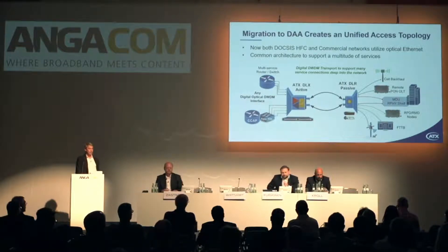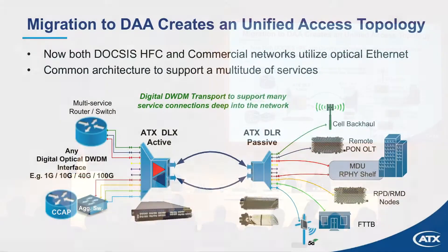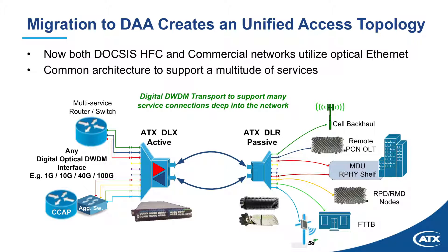As we do this migration, we've been using optical Ethernet for business services, cell tower backhaul, and a variety of more commercial applications. Now as we transition from RF optics to all digital, we really have a unified access topology combining the HFC delivery mechanism along with commercial services — supporting DAA nodes, cell backhaul, PON overlay with remote OLT applications, fiber to the business, and thinking ahead towards the rollout of 5G radios.